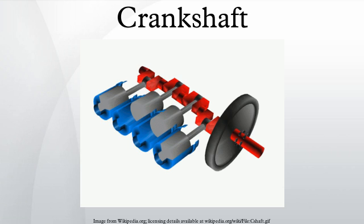It is typically connected to a flywheel to reduce the pulsation characteristic of the four-stroke cycle, and sometimes a torsional or vibrational damper at the opposite end to reduce the torsional vibrations often caused along the length of the crankshaft by the cylinders farthest from the output end acting on the torsional elasticity of the metal.